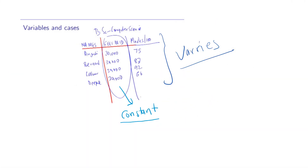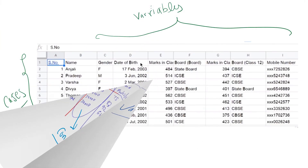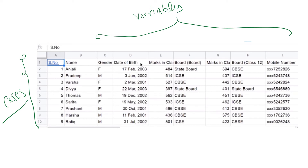Now, variables and cases. Variables are shown in columns and cases are displayed in rows. Column represents variables, whereas rows represent cases — for example, Anjali, Pradeep, Varsha, Divya, Thomas are cases, whereas names, gender, date, worth, and marks are the variables.